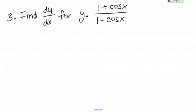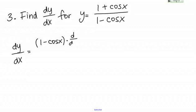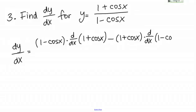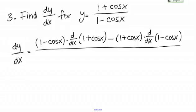Number 3: find dy/dx for y equals (1 plus cosine x) over (1 minus cosine x). This is a quotient, so I need to use the quotient rule. The way I remember it: bottom times the derivative of the top, minus top times the derivative of the bottom, all over the bottom squared. So that's: (1 minus cosine x) times the derivative of (1 plus cosine x), minus (1 plus cosine x) times the derivative of (1 minus cosine x), all over (1 minus cosine x) squared.